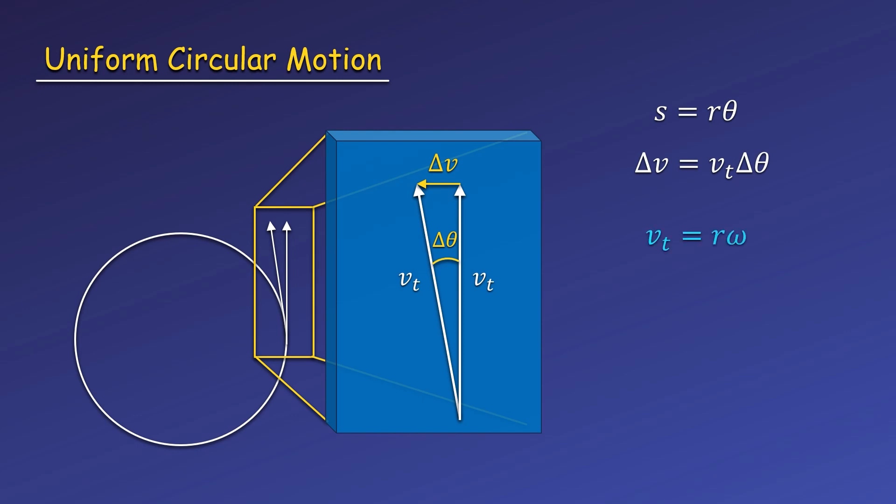Now we can write the tangential speed as the radius times the angular velocity and replace the angular velocity with Δθ over Δt from its definition. Here we'll rearrange for Δt.